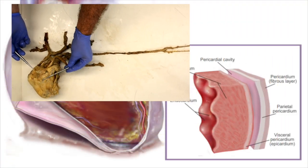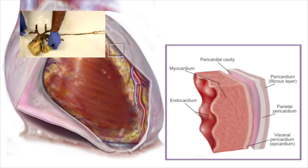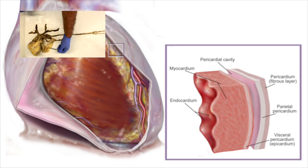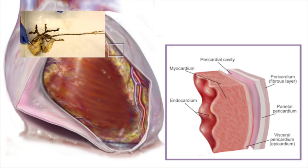The outermost layer of the pericardium is the fibrous pericardium. If we reflect it, we have a serous membrane. This layer here is the parietal layer of the serous pericardium, and then the visceral layer of the serous pericardium is on the heart — it is also called the epicardium.